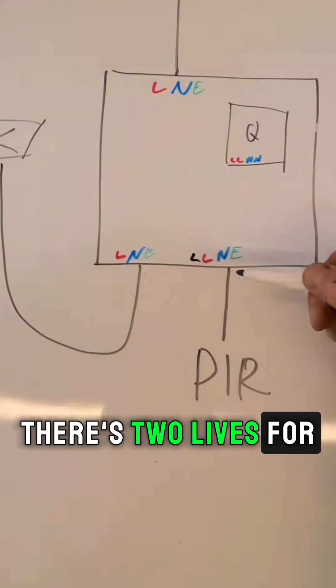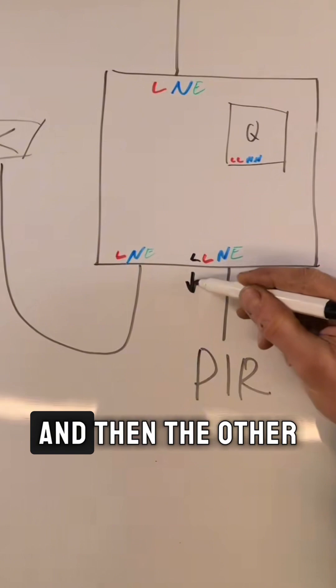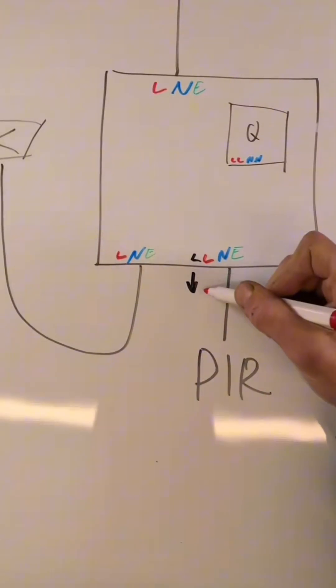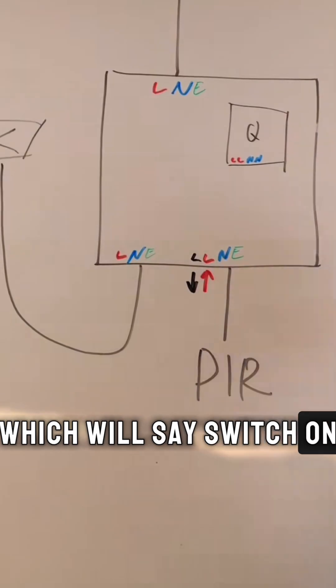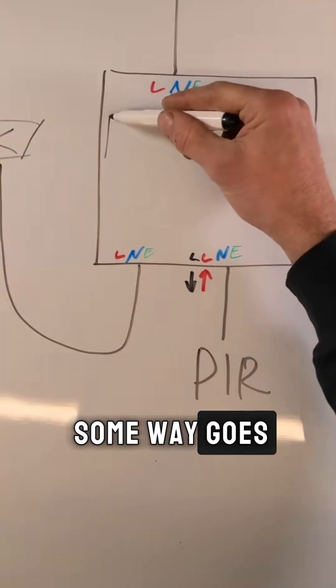So there's two lives for the PIR. One is to give it the live, and then the other one is a live going out which will say switch on. And what we also had in there was some Wagos.